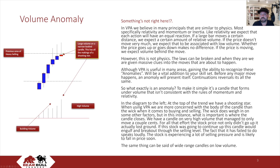In the diagram to the left, at the top of the trend, we have a shooting star. When using VPA, we are more concerned with the body of the candle than the wick when it comes to buying and selling. The wick weighs in on some other factors, but in this instance, what is important is where the candle closes. We have a candle on very high volume that managed to only move a couple of cents. For all that effort, the stock price not only didn't go up — it actually lost ground. If this stock was going to continue up, this candle would engulf and break through the selling level. The fact that it has failed to do so speaks loudly. The stock is experiencing a lot of selling pressure and is likely to fall in price soon.